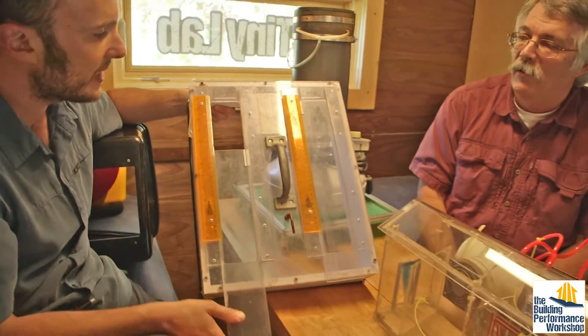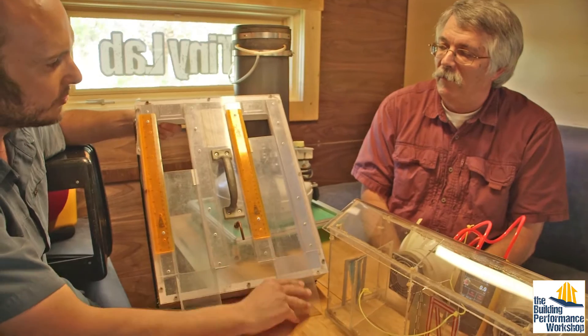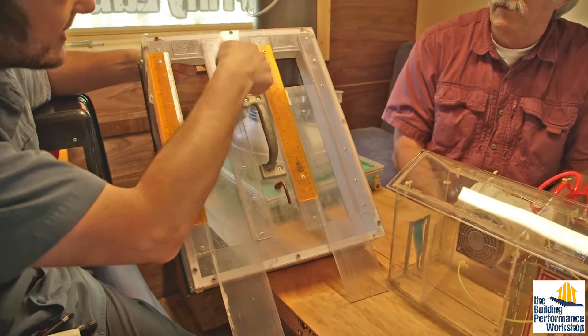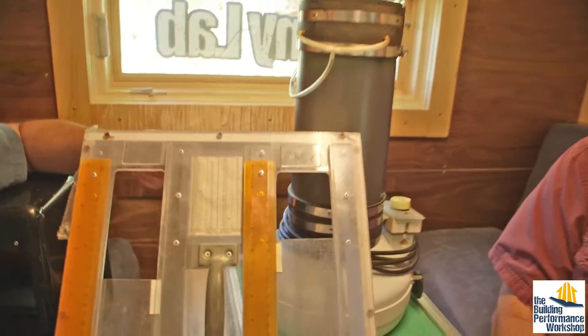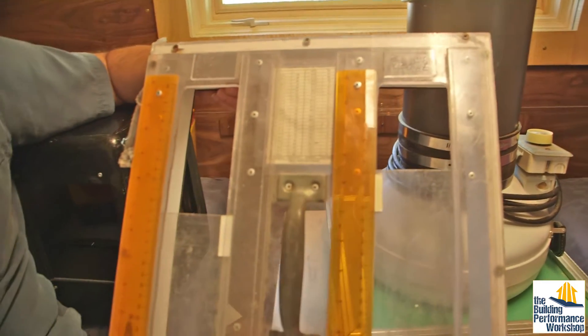So you just open up the holes to a certain size and you've got the size and you figure out what the multiplier is and then you can figure out based on the pressure inside the pan what the flow is. Awesome. Super great.